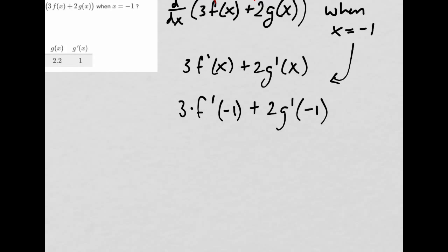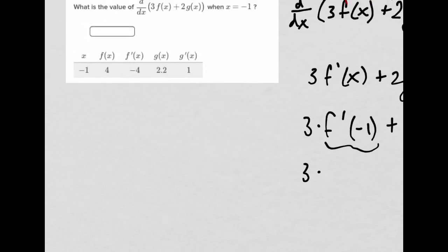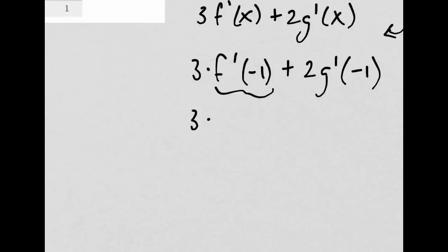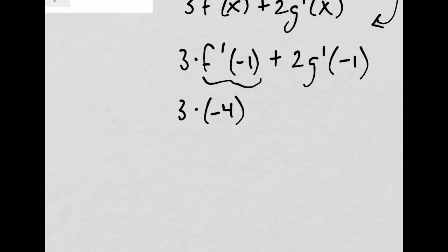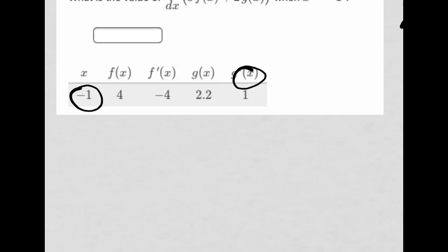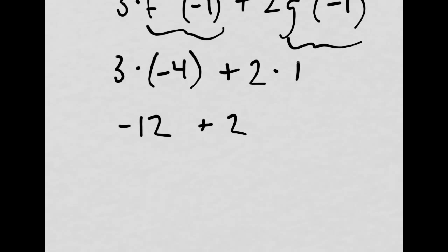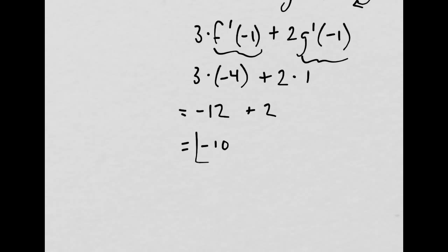And then I just use my table. So 3 times whatever this is. F prime of -1 equals -4. So that's -12. Nice. Plus 2 times... Well, g prime of -1 equals 1. Okay, equals 1. So plus 2. Equals -10. Well, that's nice. That's easy.